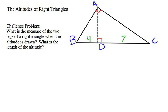Alright, here's a challenge problem for you. This is kind of a summary of theorems 8.1, 8.2, and 8.3. So, I'm given the right triangle ABC, and I draw the altitude. The altitude splits the hypotenuse BC into two segments, BD and DC. BD is 4, and DC is 7. So the question is, with this example, what's the measure of the two legs of the right triangle when the altitude is drawn? And what is the length of the altitude?